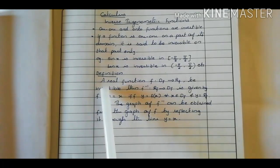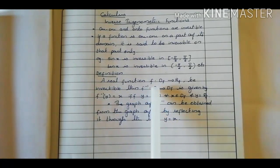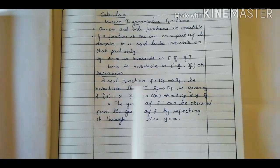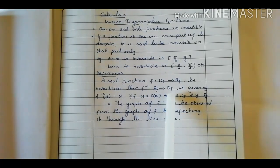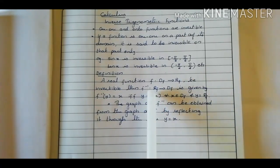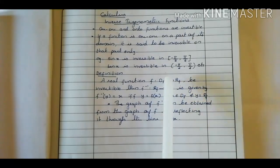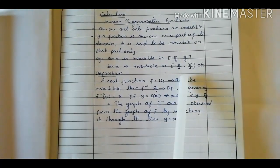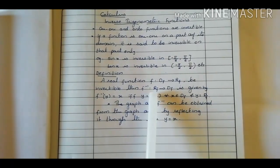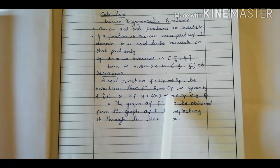You can see this for a real function f from domain of f to range of f that is invertible. Then you can write f inverse — that is from range of f to domain of f. Just interchange the role of domain and range here. Domain of f becomes the range of f inverse, and range of f becomes the domain of f inverse.